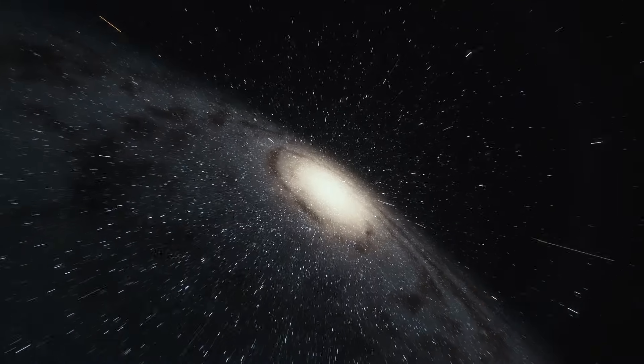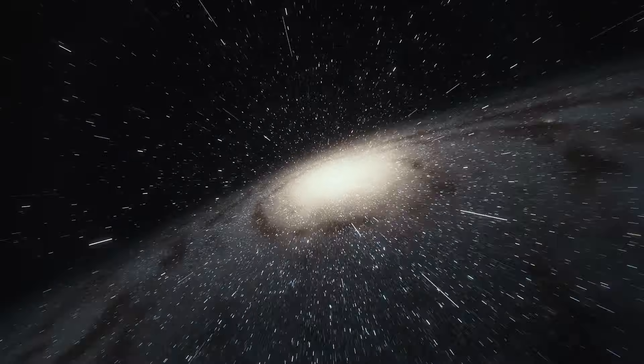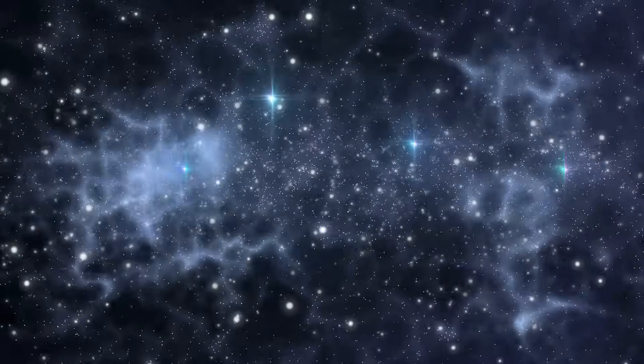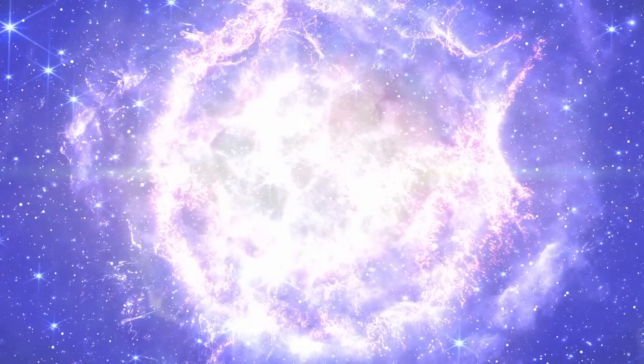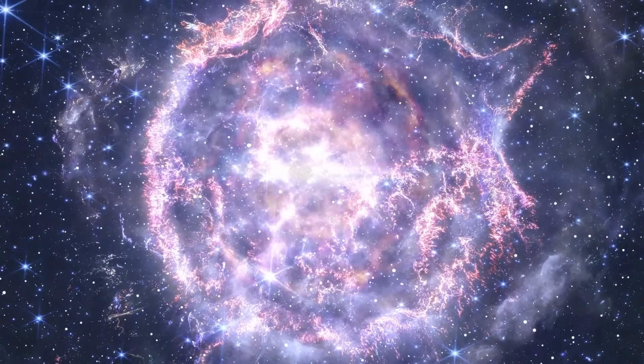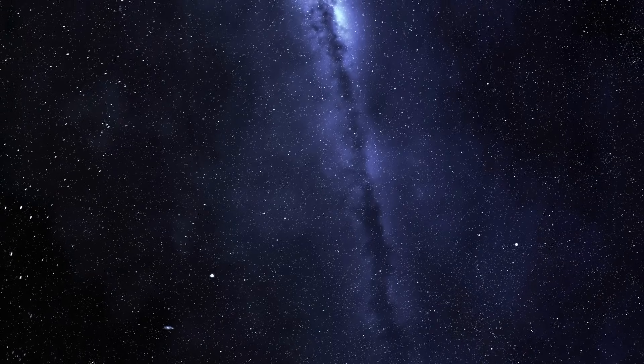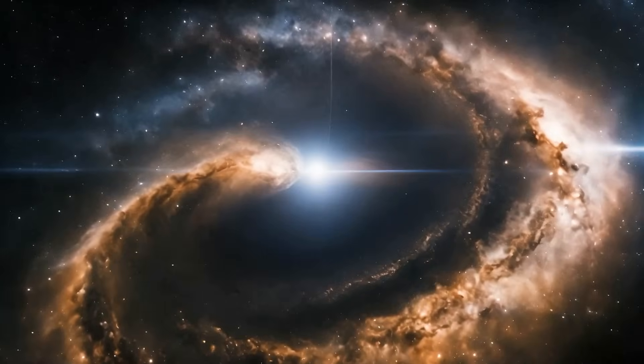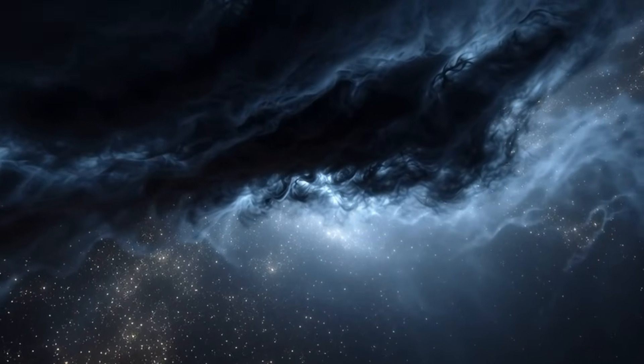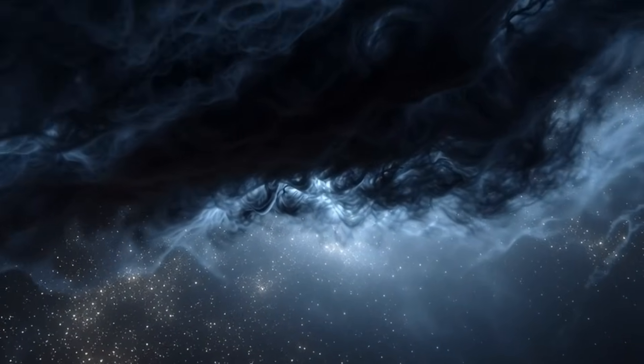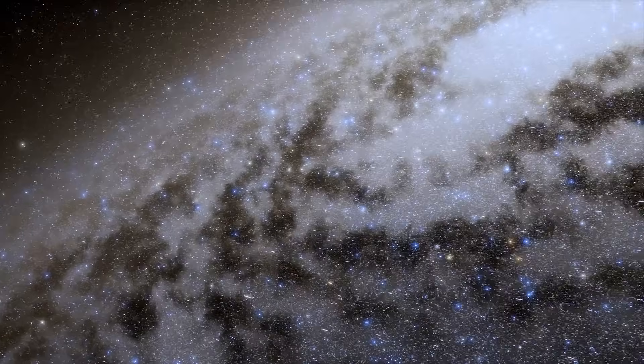If that's true, the fate of the universe could be far more complex than we thought. A constant dark energy would lead to an endlessly expanding universe. But if that energy increases over time, the expansion could eventually become destructive. This scenario is known as the Big Rip. So how does the universe respond to this force in geometric terms? If dark energy determines not just the rate of expansion but the very shape of the universe, then what is the true form of the cosmos?